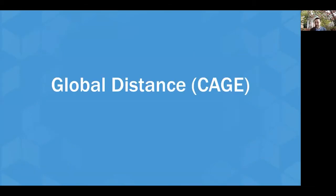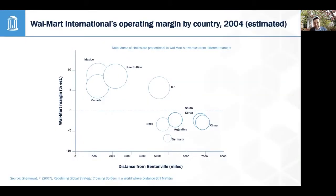This is the CAGE distance framework. To introduce this idea, I want to start with a puzzle that the author Pankaj Ghemawat started with. He noticed a statistical regularity where physical proximity between a headquarters and country operations around the world seemed to be correlated with both the amount of revenues and profit margin on those revenues. For example, Walmart had much higher revenues and higher margins in Puerto Rico than in much larger countries like China, Germany, or Brazil — despite population size and market size.